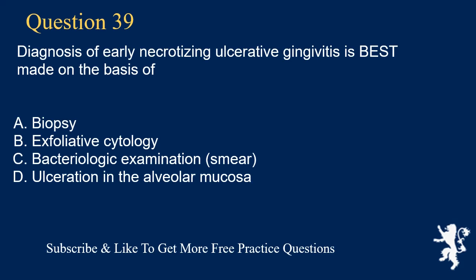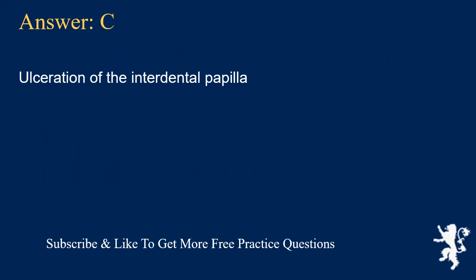Question 39. Diagnosis of early necrotizing ulcerative gingivitis is best made on the basis of: A. Biopsy, B. Exfoliative cytology, C. Bacteriologic examination smear, D. Ulceration in the alveolar mucosa. Answer: C. Ulceration of the interdental papilla.